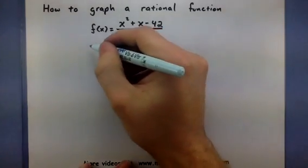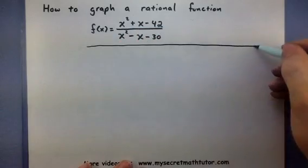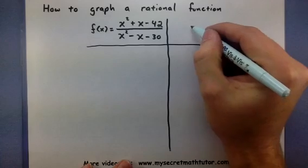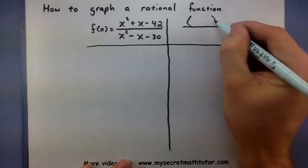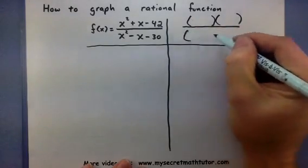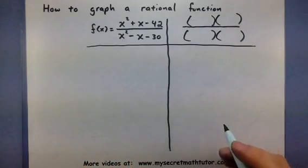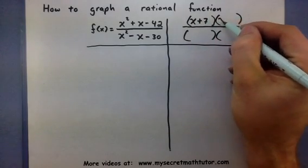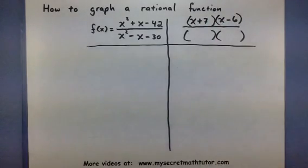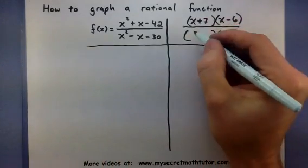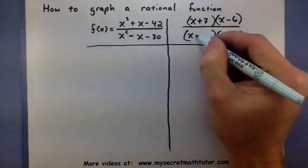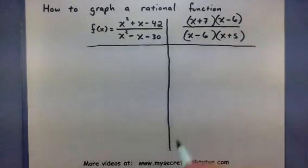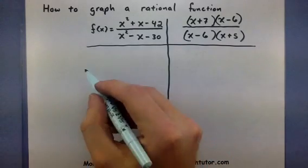So, the first thing that I want to do with this function here is to really look at its factored form. Imagine taking this and factoring the top and the bottom. Well, looking at the top, I can see that it factors into an x plus 7 and an x minus 6. For the bottom, it looks like we have an x minus 6 and an x plus 5. That looks pretty good.